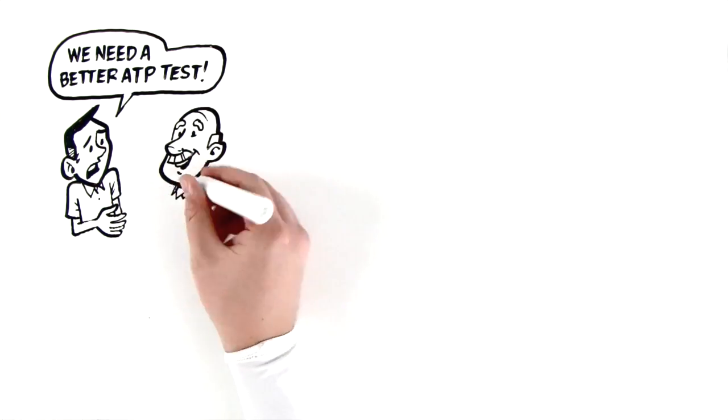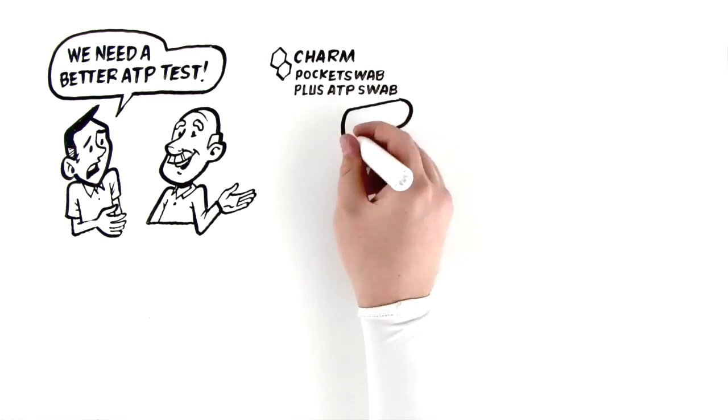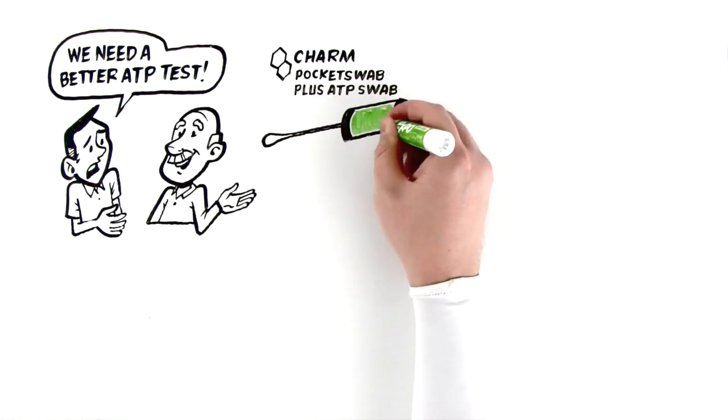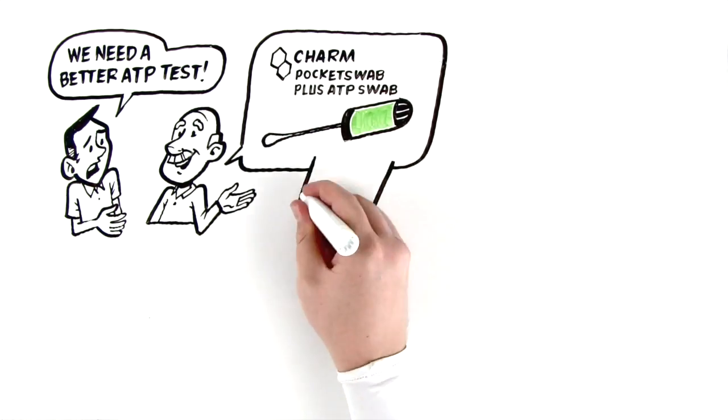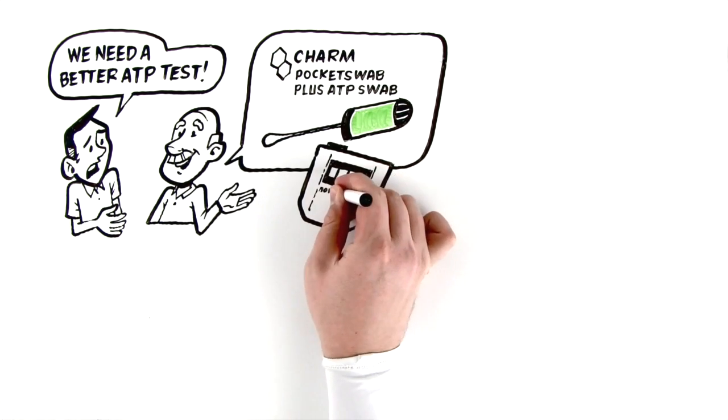Jim discovers Charm's Pocket Swab Plus ATP Swabs used with the Novolume 2 detection system. Jim works with Charm Sciences' technical sales team to review and implement a more robust ATP monitoring program.